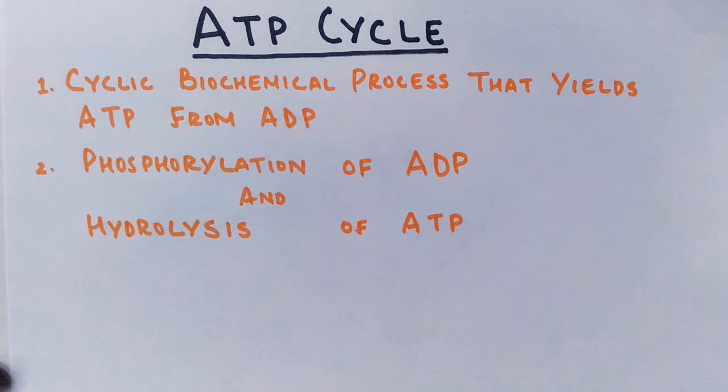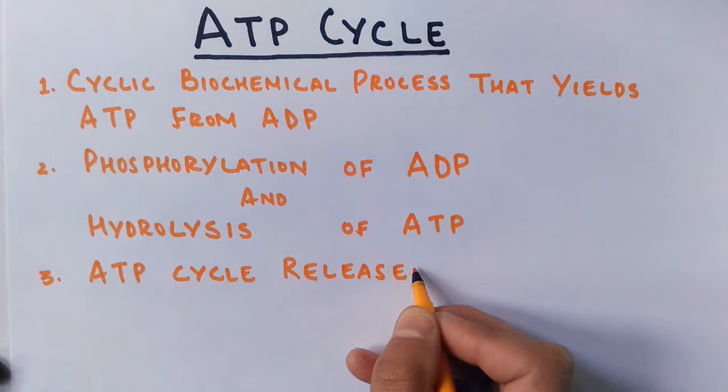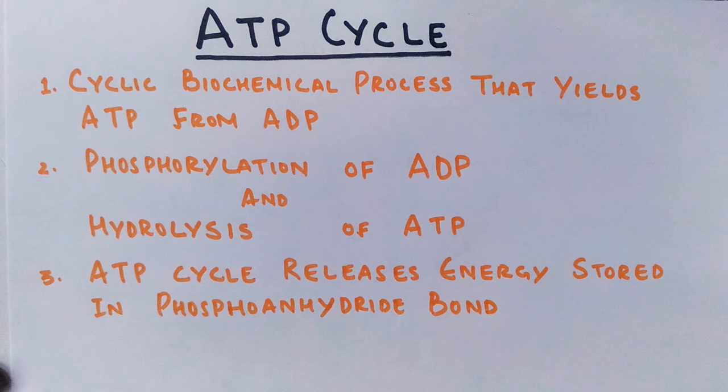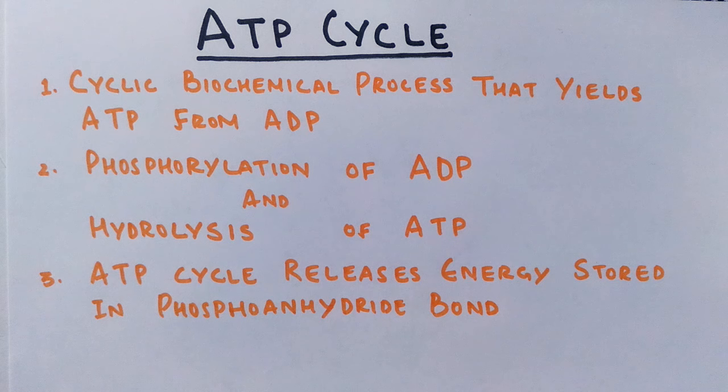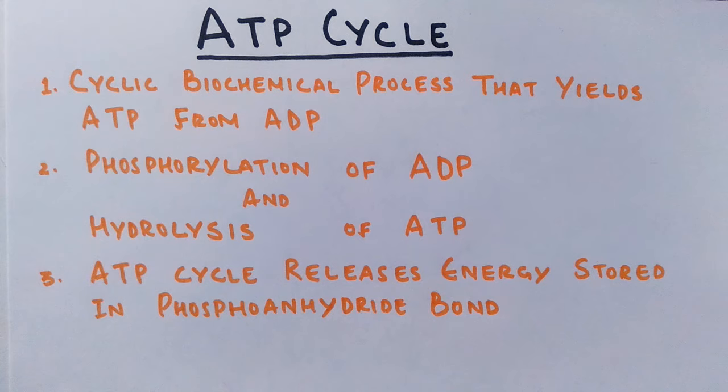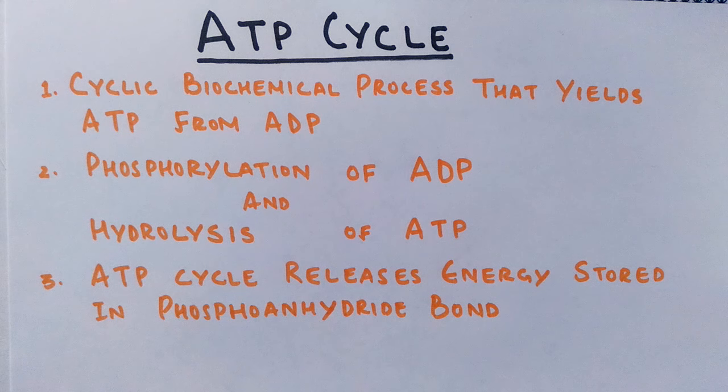Finally, we see the ATP cycle releases energy stored in the phosphoanhydride bond. So it's the bond that's present between the oxygen molecule and phosphorus molecule. And it must be noted here: it's not the phosphate group of inorganic phosphate that releases energy, but it is the bond between phosphorus and oxygen that has got a lot of energy in it. But it's a weak bond, easy to break, and it releases immense energy.